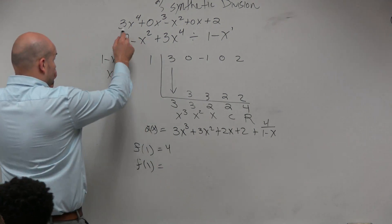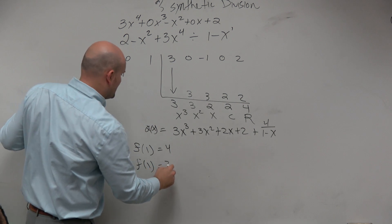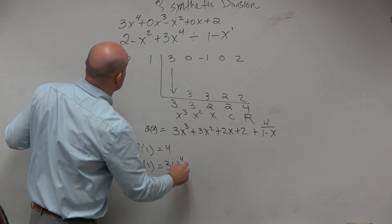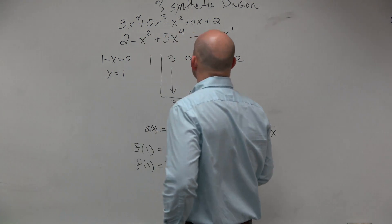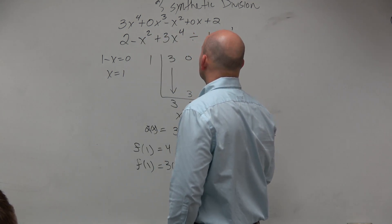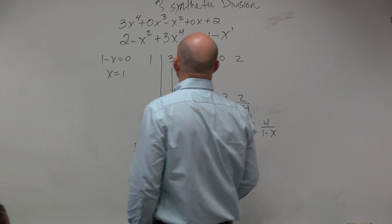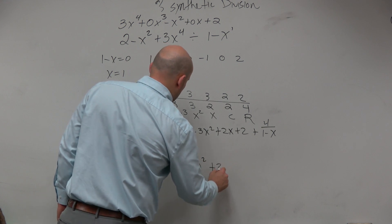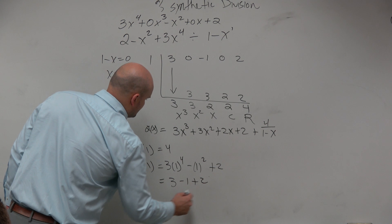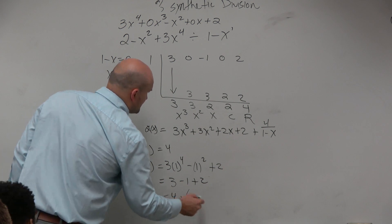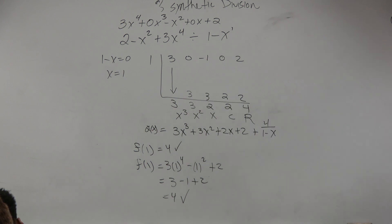I'm going to call this f of x. So if I plug in a 1, I get 3 times 1 to the 4th minus 1 squared plus 2. So I get 3 minus 1 plus 2, which equals 4. Therefore, I know that I didn't make a mistake using my synthetic division — I did that correctly.